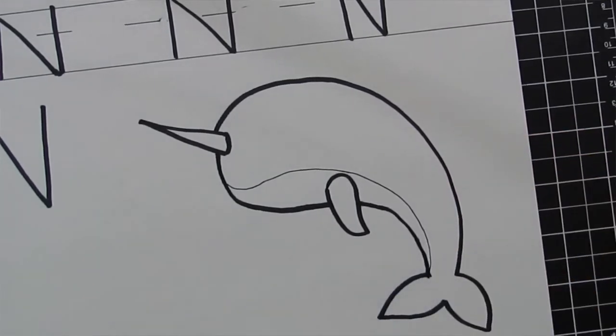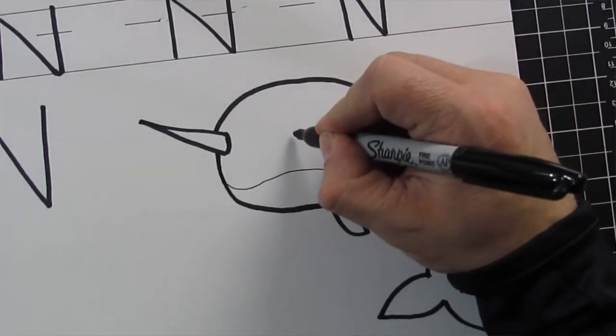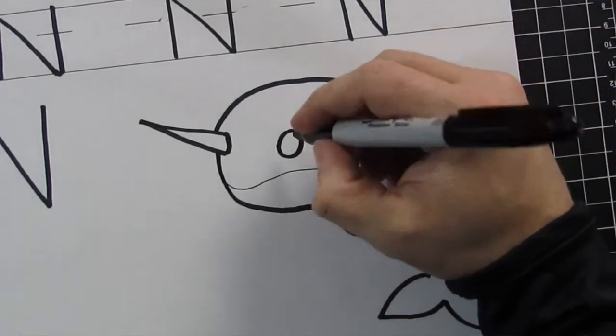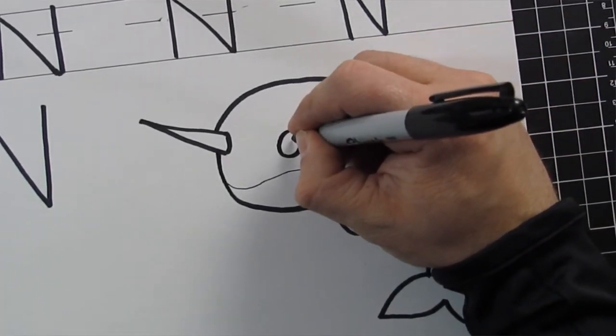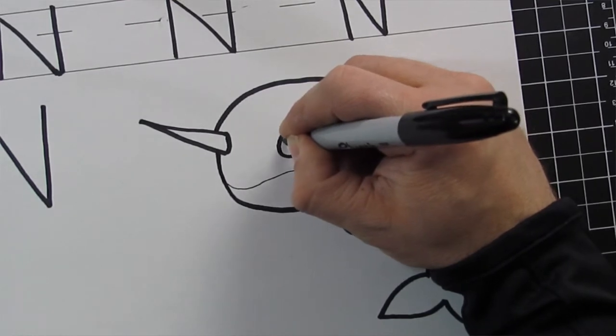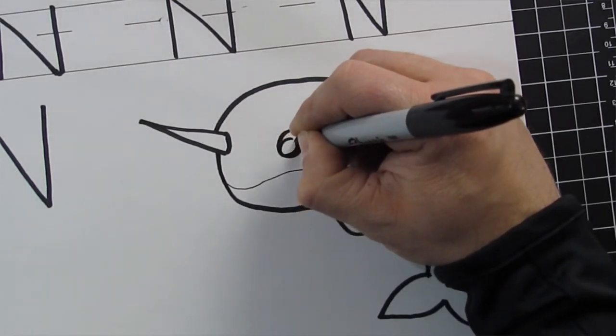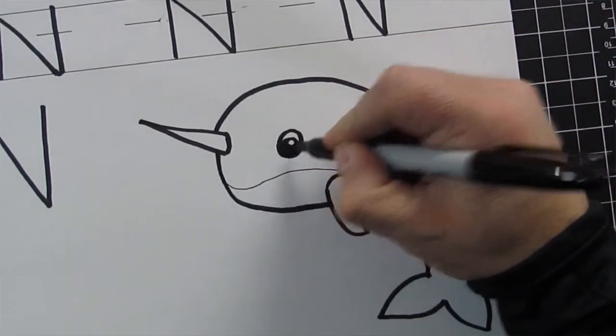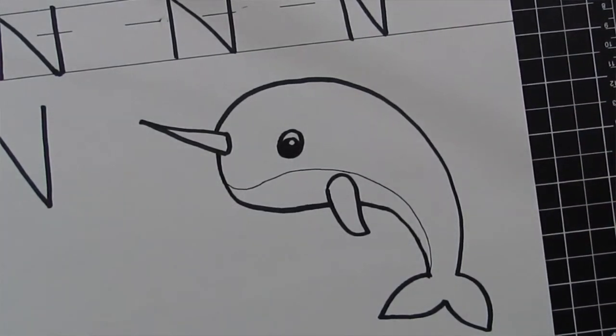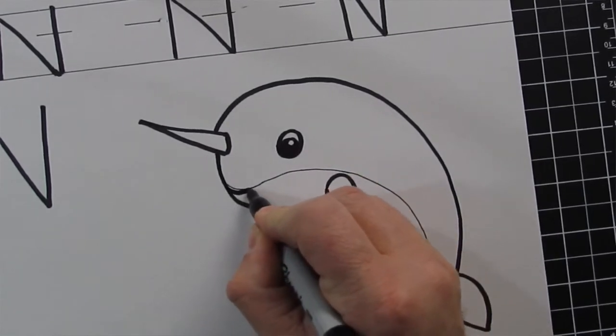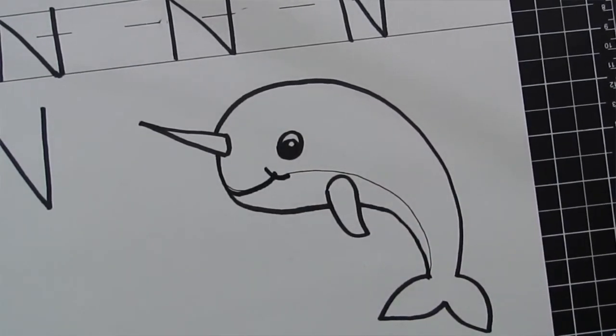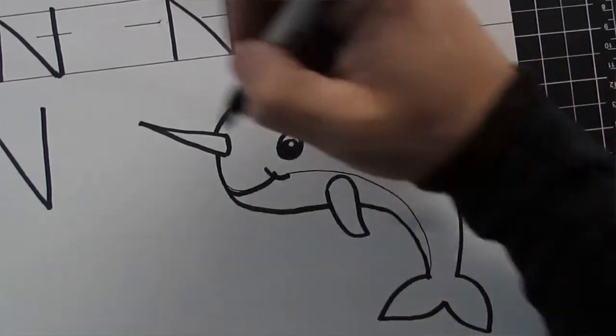And then for the eyeball, make it a big round eyeball. We're going to do two circles, one bigger one and then inside that one, a little one. The little one will stay white and the one underneath will be colored in black. Now this looks like a happy narwhal to me, so let's follow this line and we'll give him a smile just like that.